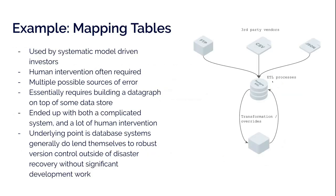To give an example drawn from my professional life — I used to work in systematic trading, which means model-based investments. You create a model and map it to tradable securities. In order to do that, you often have to map from different ID spaces. Third-party vendors give you information about the world, and you map that into tradable securities you've agreed with your clients you're allowed to trade. You're pulling in data from third-party vendors, ETL-ing it into your own databases, doing transformations and overrides, and then using that data to drive your trading process. It's small data — about 80,000 rows — but it's extremely valuable. Mistakes in mappings can lead to incorrect trades and financial liability, requiring a ton of scrutiny.